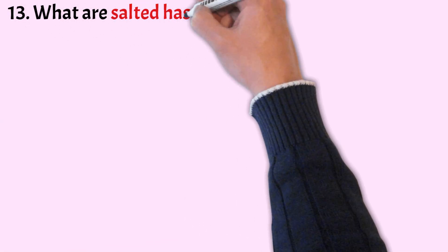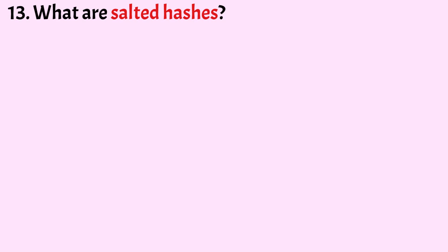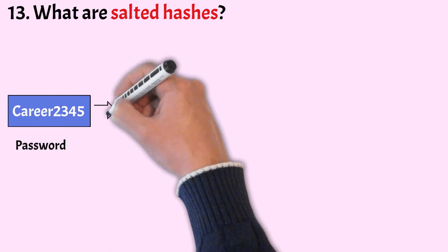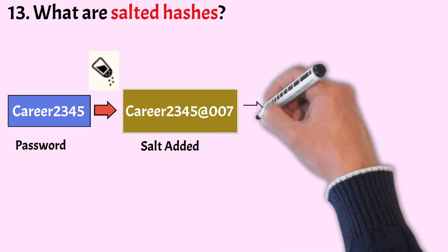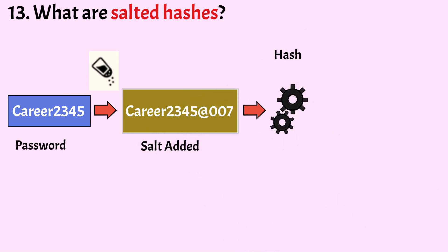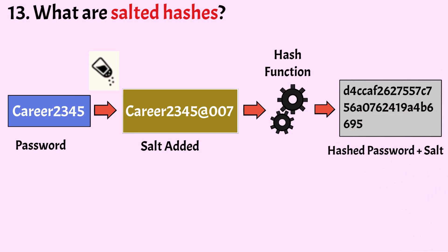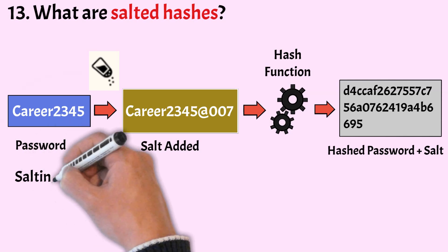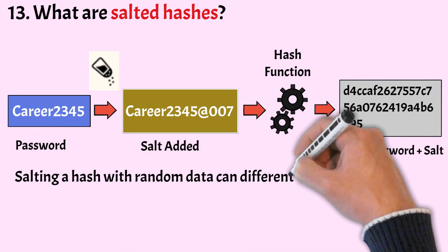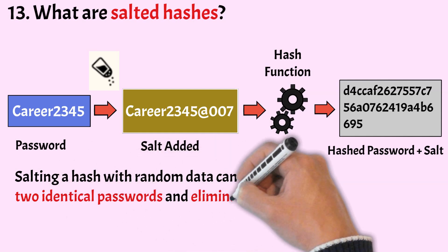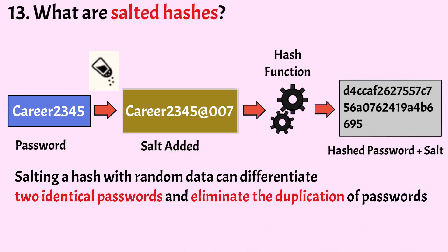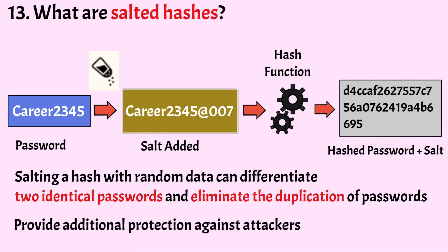What is a salted hash? A salted hash is a way to boost security and reliability of a hash function, where random data is added to the original value or plain text before hashing is done. This is especially done when we hash passwords before storing them in a database. Salting a hash with random data can differentiate two identical passwords and eliminate duplication of passwords, providing additional protection against attackers.